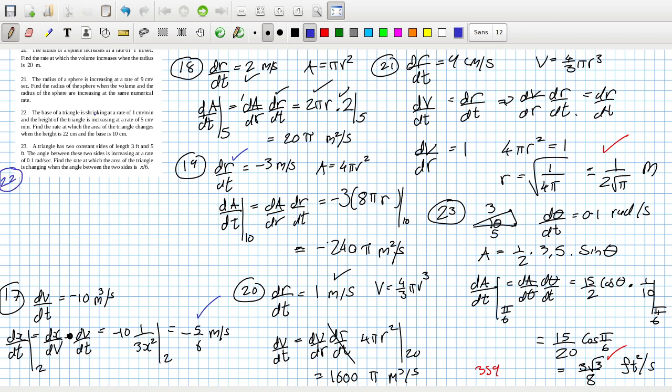22. The base of a triangle is shrinking at the rate of 1 cm per minute. And the height of the triangle is increasing at that rate. Find the rate at which the area changes. Okay, so the base db dt is minus 1 centimetres per minute, and the height dh dt is 5 centimetres per minute.